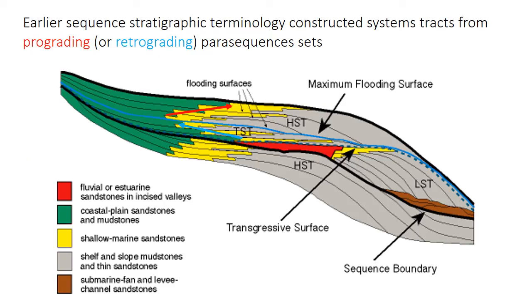Until recently, sequence stratigraphic terminology was based on the idea that systems tracks were made up of sets of parasequences. So each parasequence is progradational — that's the typical coastal parasequence — but those parasequences were either stacked in larger scale sets that were progradational or retrogradational. If you look at this diagram, you'll note that even in the TST, these yellow shallow marine sandstones still prograde outwards during each parasequence, but the overall pattern is one of retrogradation.